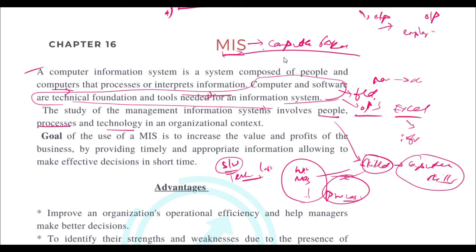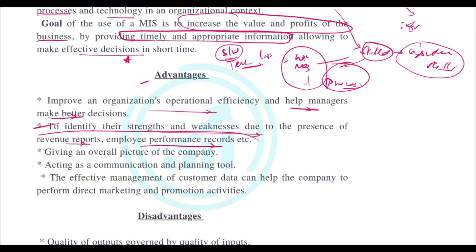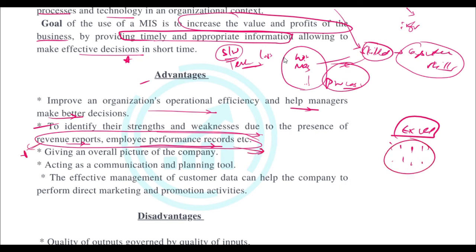The goal of MIS is to increase the value and profits of the business by providing timely and appropriate information, allowing managers to make effective decisions in a short time. It increases operational efficiency, helps managers take better decisions, and identifies strengths and weaknesses through revenue reports and employment performance records. Once you have entered all data and processed it, you can straightaway know how much profit you earned or who is performing better — giving an overall picture of the company.